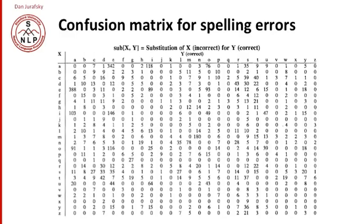So for example, in spelling, here's a confusion matrix for spelling errors. So if you look at this confusion matrix, you can see that E is very likely to be confused with A or O and E.